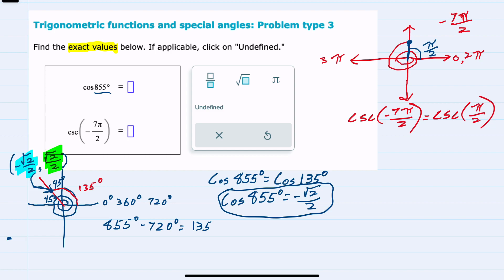And now that we have our coterminal point, we can see that the coordinates here at π halves have an x value of 0 and a y value of 1, meaning we have a cosine of 0 and a sine of 1.